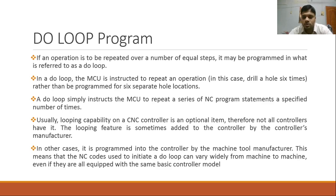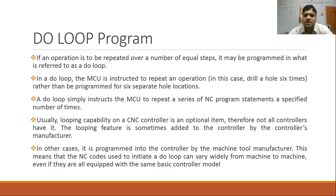A do loop simply instructs the machine control unit to repeat a series of NC program statements a specified number of times. Whenever we want to repeat something a number of times, we make use of do loop. Do loop will have a starting line, an ending line, and a specification of how many times the lines between the starting and ending line need to be repeated. This has a similar meaning to a do loop in any other programming language. We use loops in programming languages to reduce the number of lines.